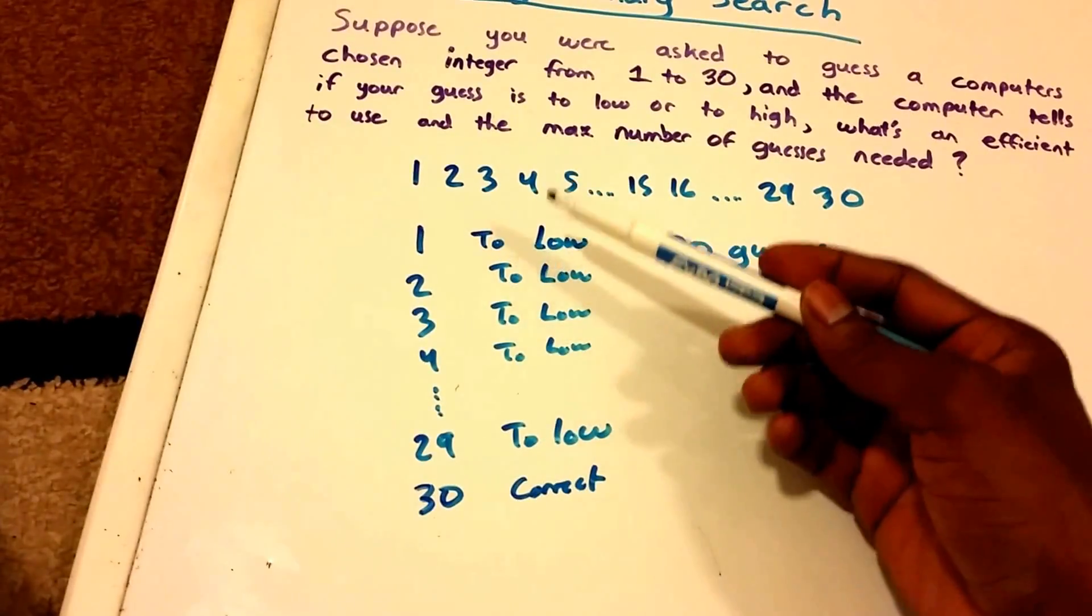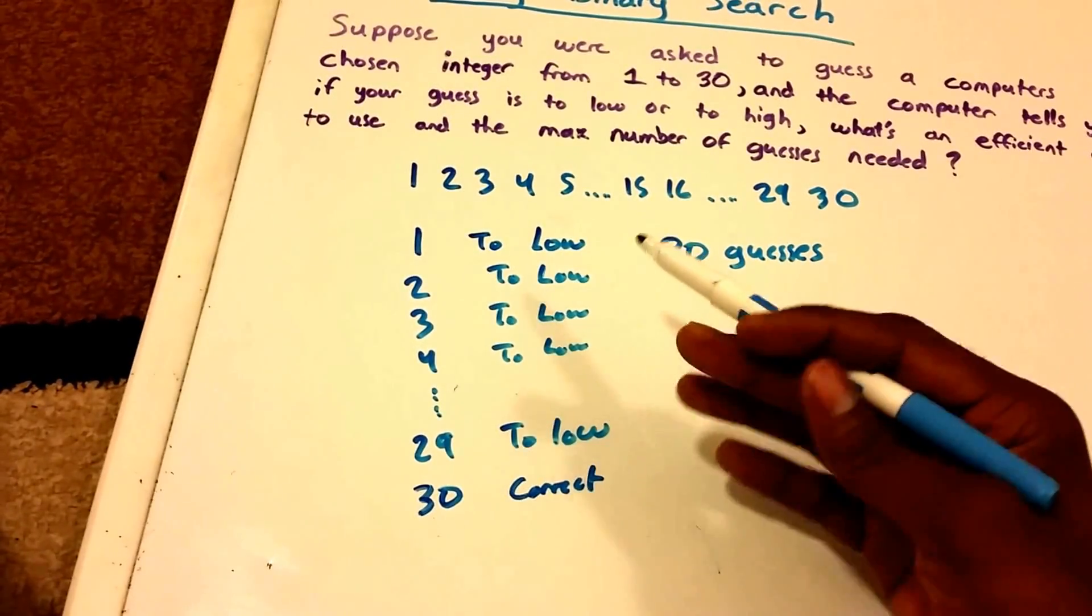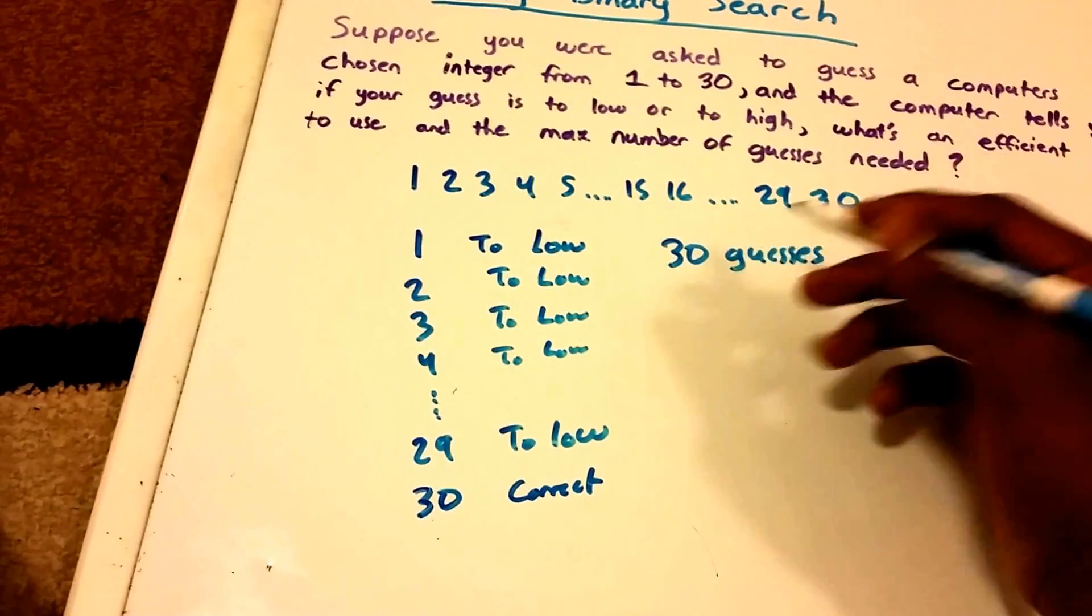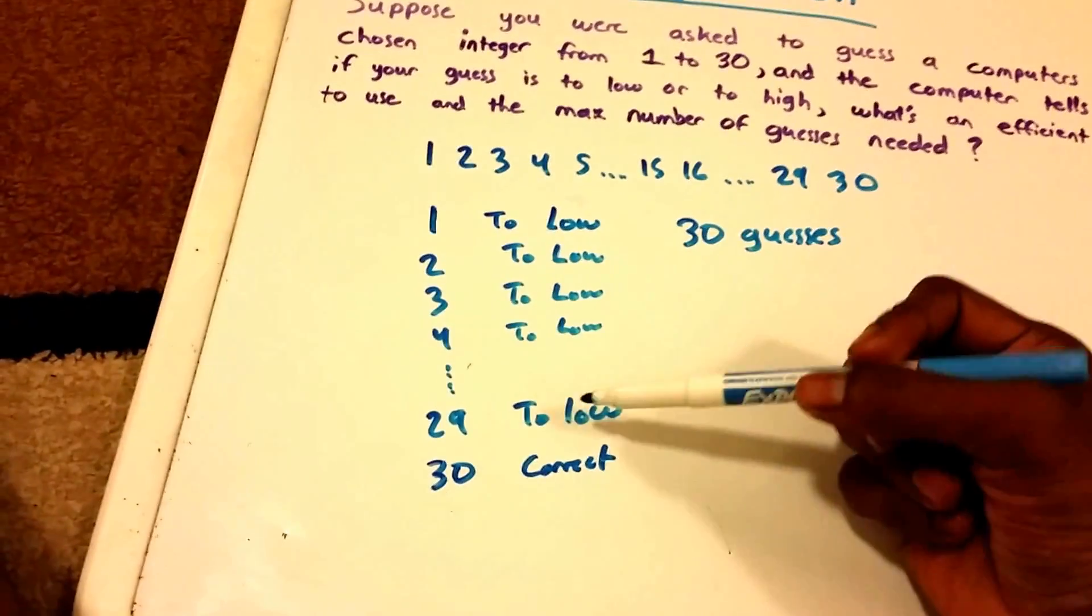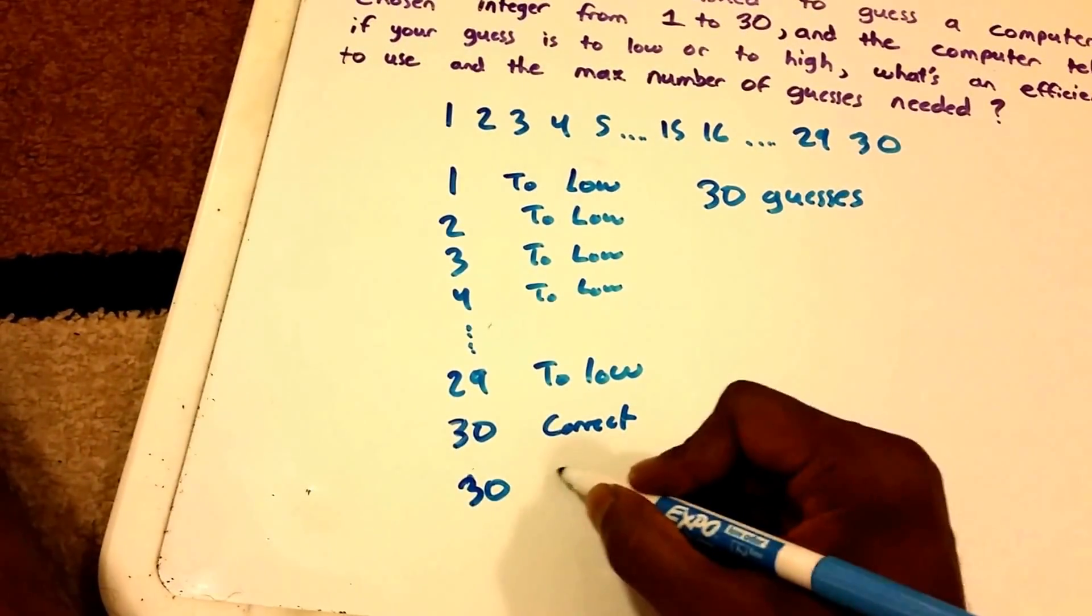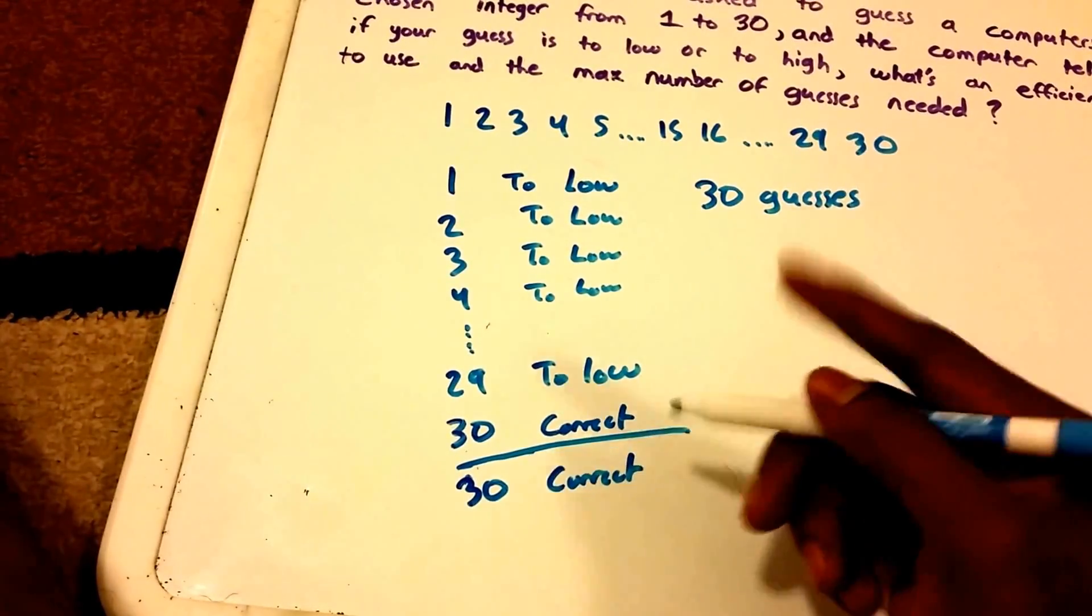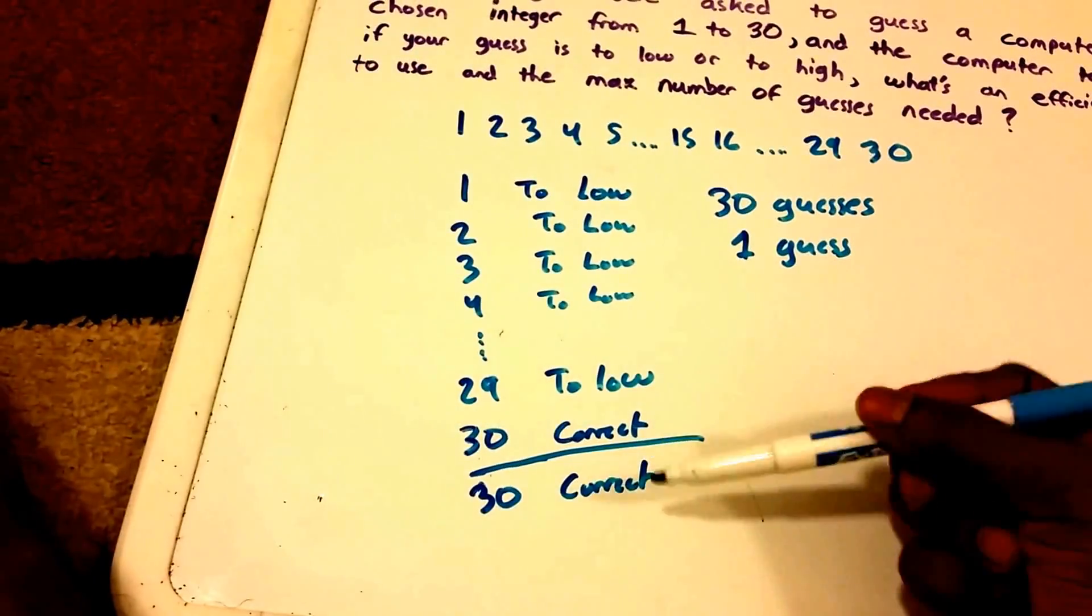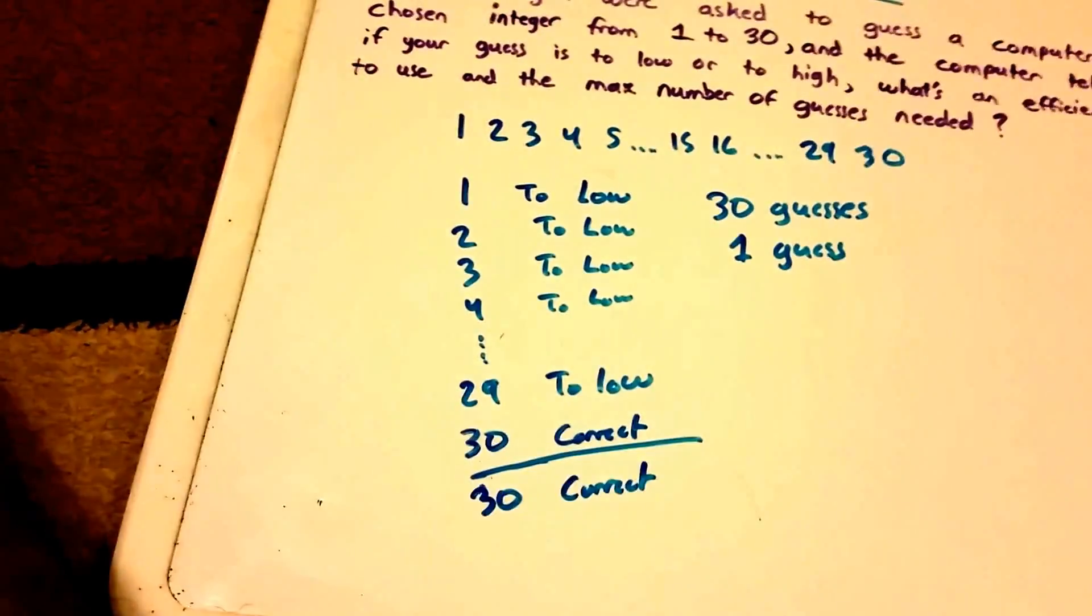So that was using this algorithm, the very worst number of guesses that it took was 30. So we're just going to keep that in mind for now. Let's say that we decide to go the opposite way. So we start off with 30. So we say is your guess 30? And it just says correct. So that took just one guess. So the number of guesses here was just one. That was the best case scenario, is that we started from the opposite end, and we got it correct.